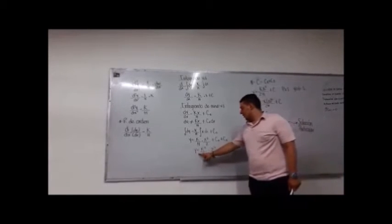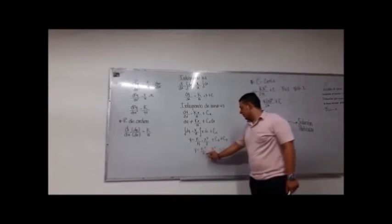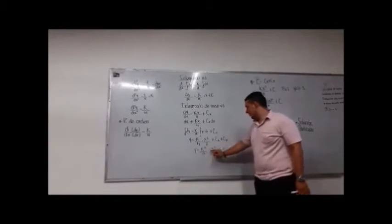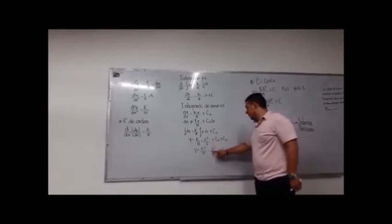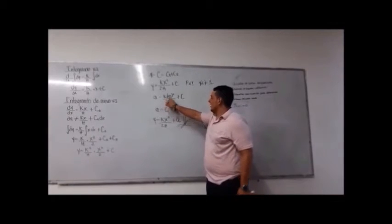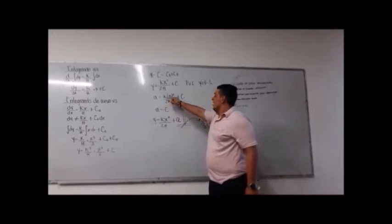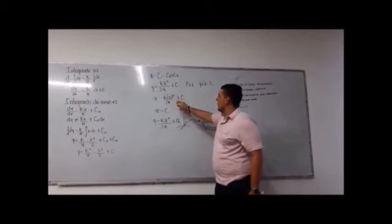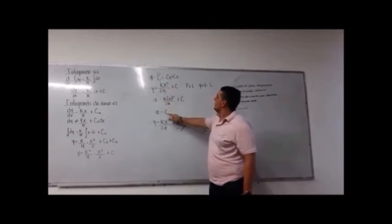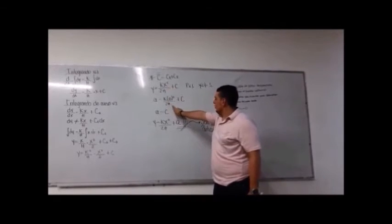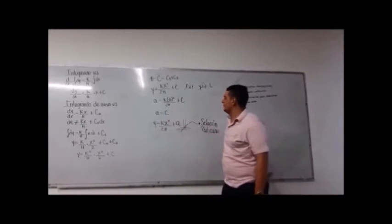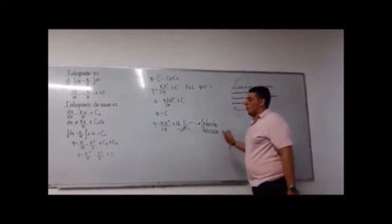y es igual a K sobre H por x al cuadrado sobre 2, más c1x más c2. Aplicando las condiciones: c1 es igual a K entre partes, y c2 se obtiene de y(0) al cuadrado sobre 2H más c, donde c es la constante de integración.